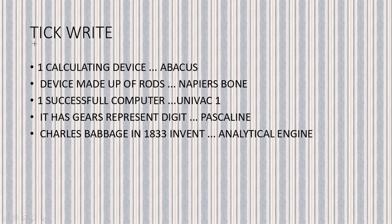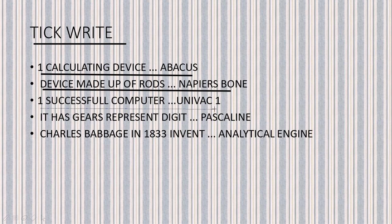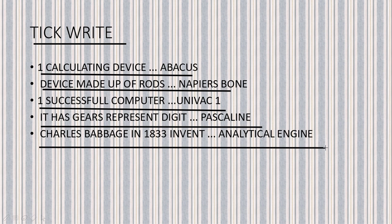Now let's move to Tick Right. Your first question is: what is the first calculating device? There are some options. Next is Napier's Bone. The first successful computer is UNIVAC First, as all those computers are improved versions of UNIVAC First. Pascaline has gears that represent digits. Charles Babbage in 1833 invented the Analytical Engine, and this is considered the first computer.